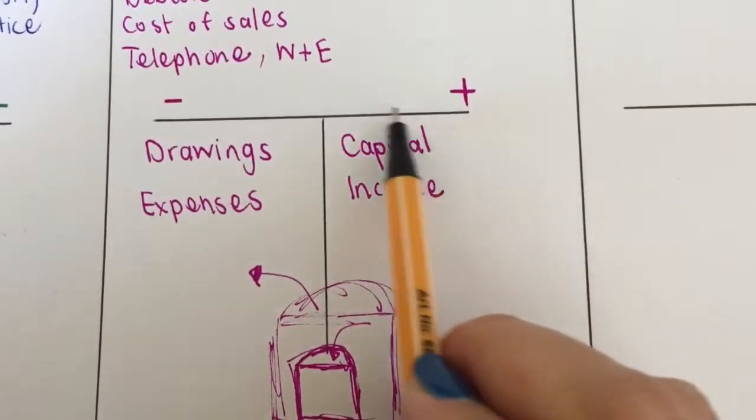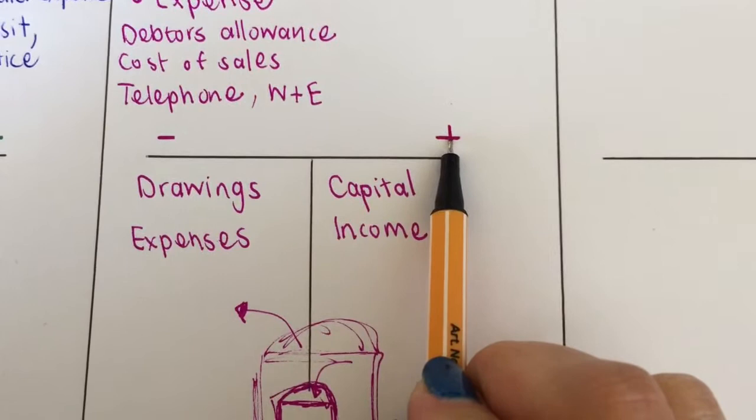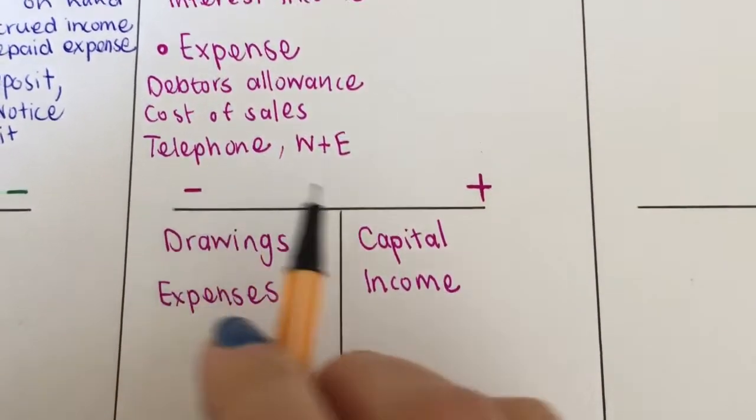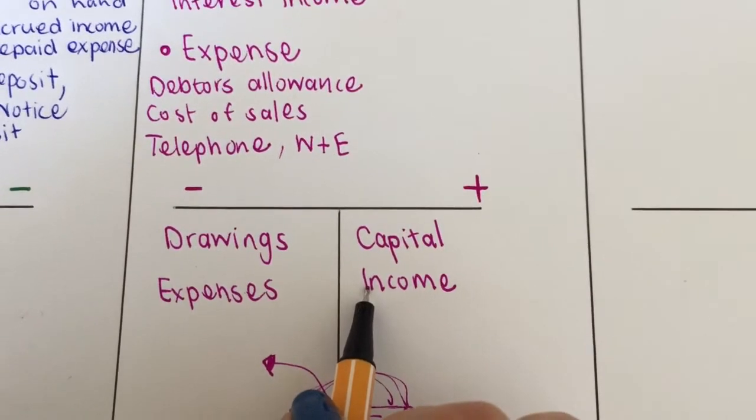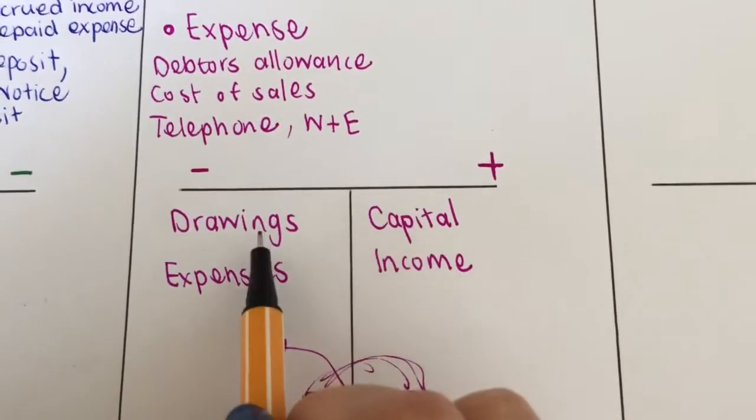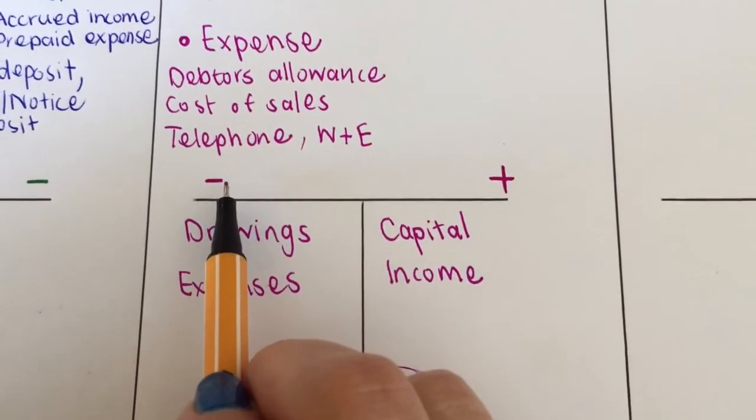If we then go to my T account here at the bottom, owner's equity will increase on the credit side and it will decrease on the debit side. So capital and all of my income will always increase my capital, and drawings and expenses—all of them—will always decrease my capital.